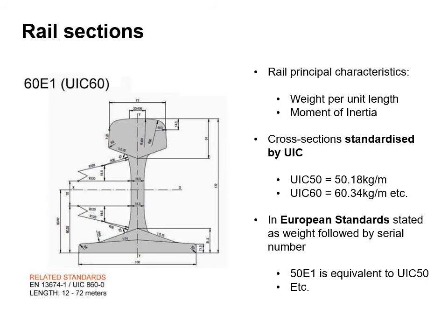Rail sections have two principal characteristics: weight per unit length and moment of inertia. Cross sections are standardised by UIC. For example, UIC 50 is 50.18 kilograms per metre and UIC 60 is 60.34 kilograms per metre. In European standards, it's stated as weight followed by a serial number — for example, 50 E1 is equivalent to UIC 50.